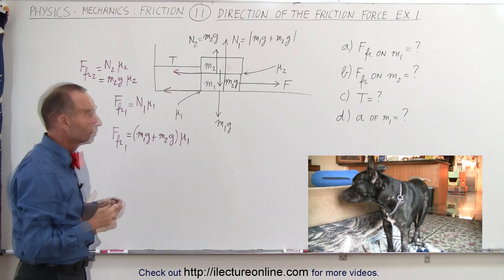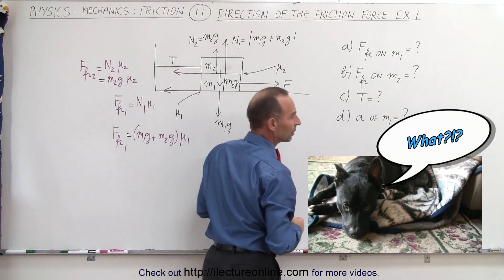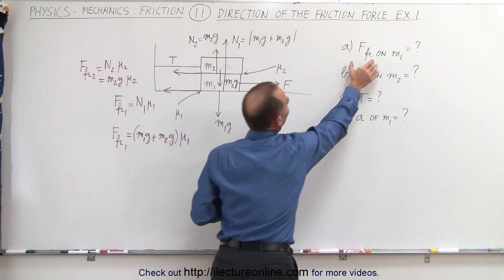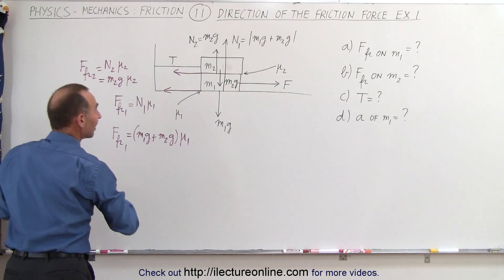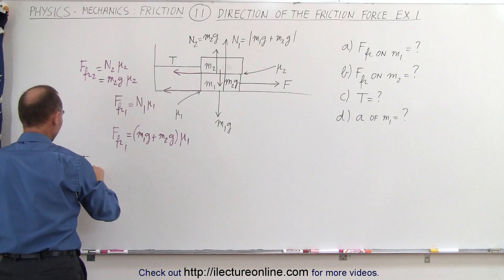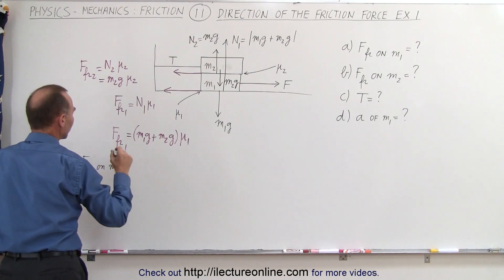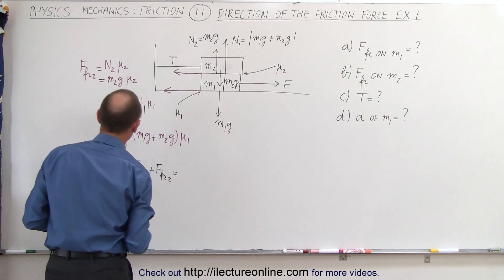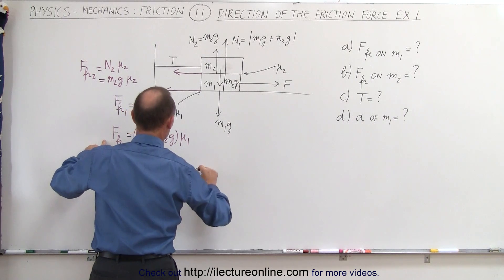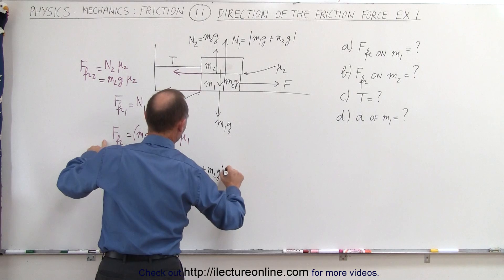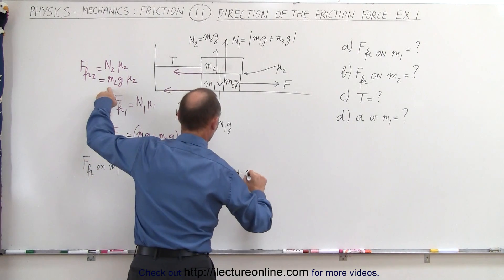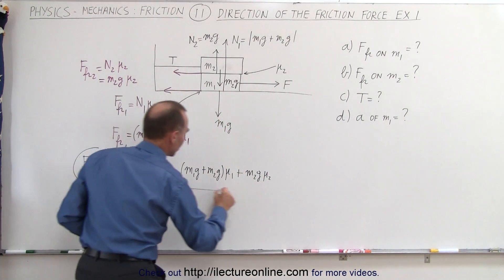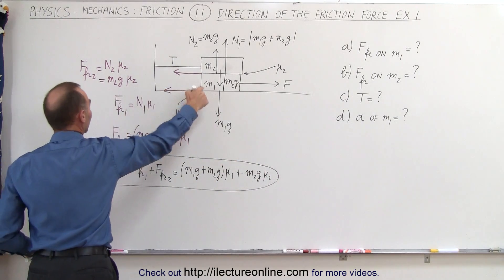Therefore, the total friction force on M1 is the sum of the two: force friction on M1 = friction force 1 + friction force 2 = (M1G + M2G) × mu sub 1 + M2G × mu sub 2. That is, for part A, the total friction force on object M1.